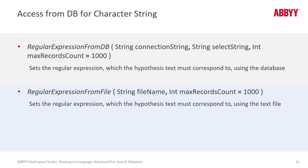Something that you absolutely can't do using the graphical user interface at this point is store a variety — a list of different regular expressions in a database using the GUI. But you can do it with FlexiLayout language. We know that we can use regular expressions in character string elements, and we know that we can separate more than one regular expression with a pipe symbol, but here's yet another option for you.